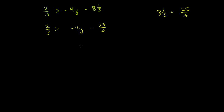Now the next thing I want to do, just because dealing with fractions is a bit of a pain, is multiply both sides of this inequality by some quantity that'll eliminate the fractions. The easiest one is multiply both sides by 3 — that'll get rid of the 3's in the denominator. One point: I did not have to swap the inequality sign, because I multiplied both sides by a positive number.